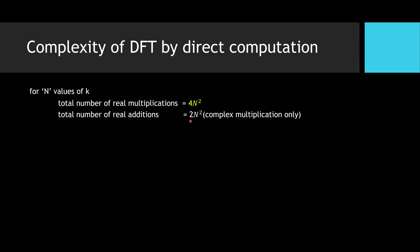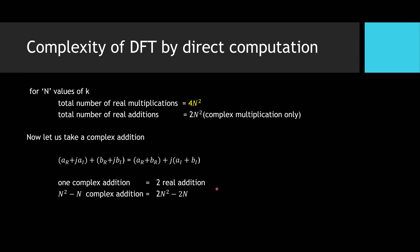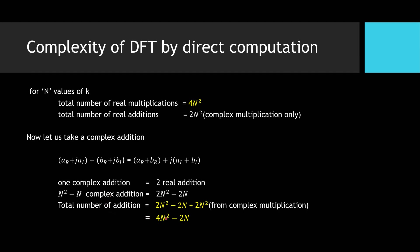However, this is not the final number of computations — we have only considered complex multiplications so far. We must also account for complex additions. For one complex addition, (A_R + j·A_I) + (B_R + j·B_I) gives (A_R + B_R) + j(A_I + B_I), so one complex addition requires two real additions. For N squared minus N complex additions, that gives 2N squared minus 2N additional real additions. Hence the total number of real additions is 2N squared minus 2N plus 2N squared, which equals 4N squared minus 2N.